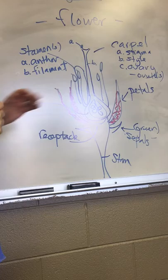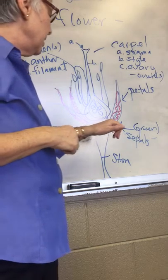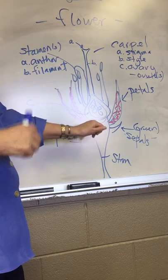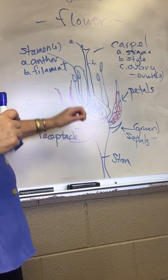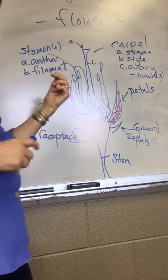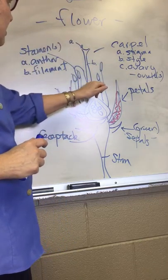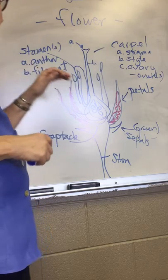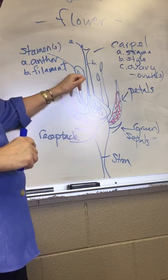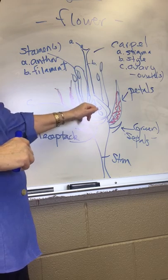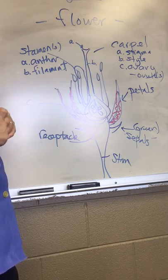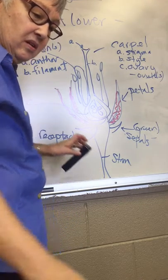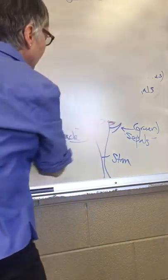All right, so to summarize, we've got a number of terms here that you need to be familiar with. We've got sepals, we've got petals, we have a stem, we have an expanded portion of the stem that actually holds the base of the flower. In the very center of the flower, we have the female part, which is called the carpel. The carpel is made up of the stigma, the style, and the ovary. Surrounding that is the male part of the flower, which is called the stamen, and the stamen is composed of the anthers containing the pollen and the filament, which is a long structure that's going to attach the anther to the base of the flower.